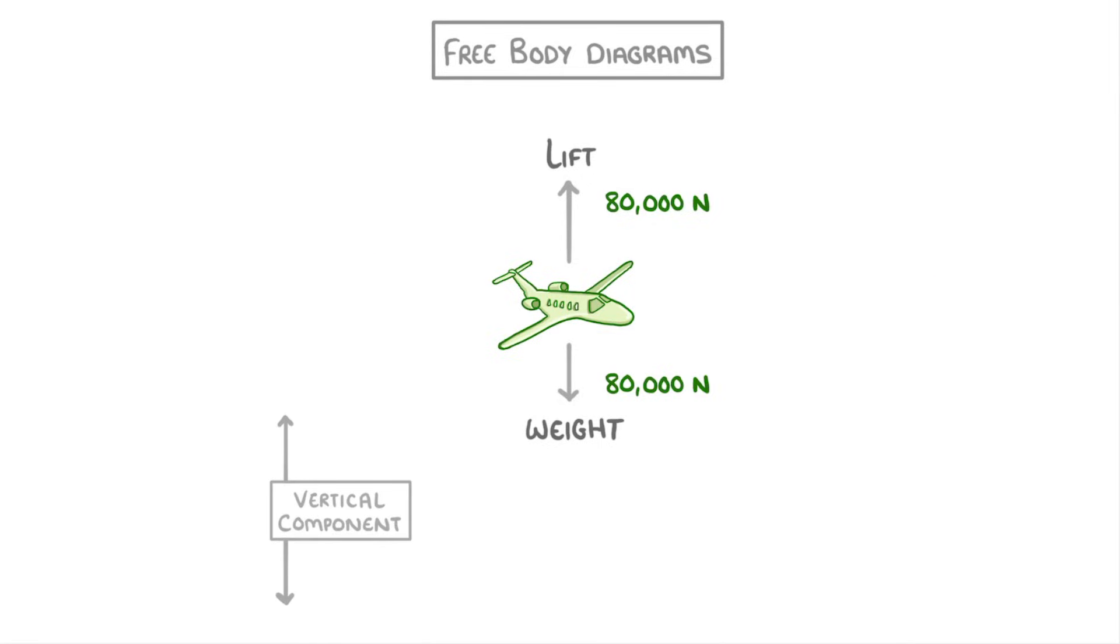For example, the vertical component of this free body diagram involves a force of 80,000 newtons up and 80,000 newtons down. So when we subtract one from the other, we're left with zero newtons overall for the vertical component.